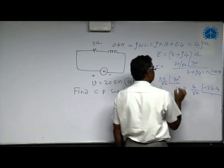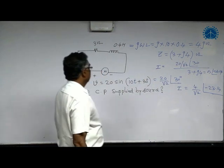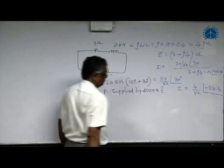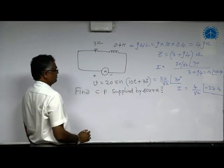This is the current. Now, with the help of voltage and impedance, we got the current in phasor form. What is the question? Complex power supplied.